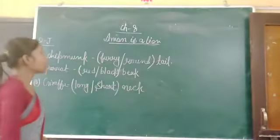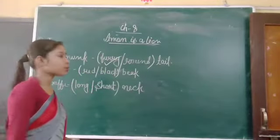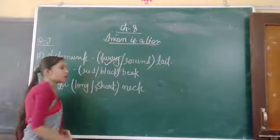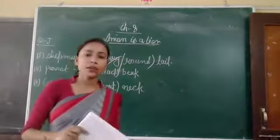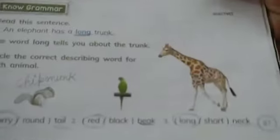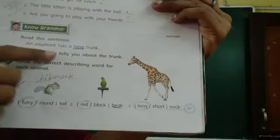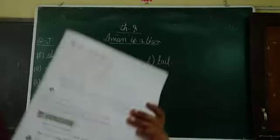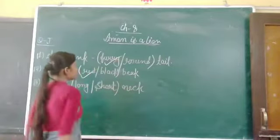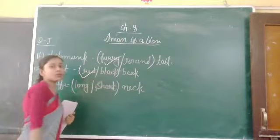So which is the correct one? Furry. Now we have parrot. Parrot — red or black. As you guys already know, if you have seen a parrot, you already know what is the correct one. Red. So parrot has red feathers. Red is the correct one.